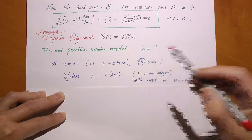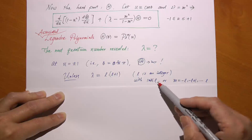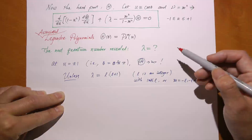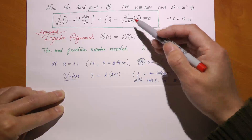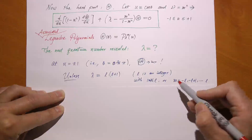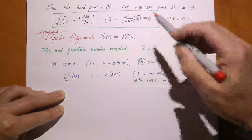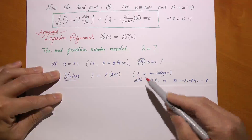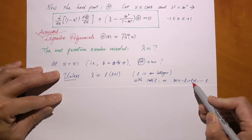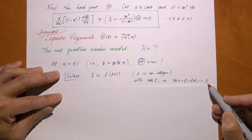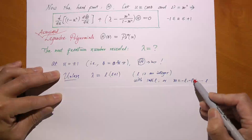So here l turns out it has to be an integer, and lambda must be the product of l times l plus one. And l is related to m as well — l must be greater than or equal to the absolute value of m. In other words, for every l you can find several values of m, but this m cannot have an absolute value which exceeds l. Therefore for a given l, m can have values from negative l, negative l plus one, all the way up to positive l.